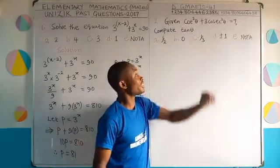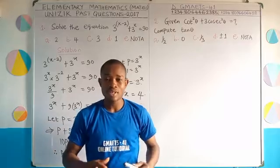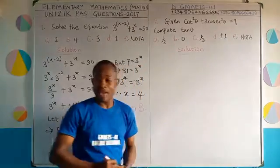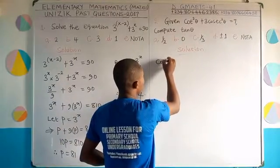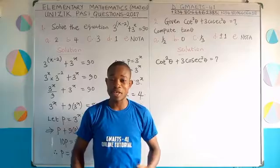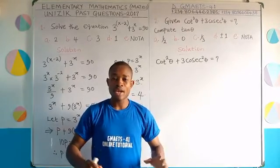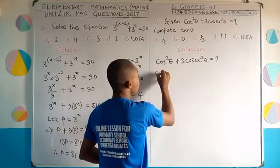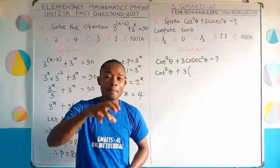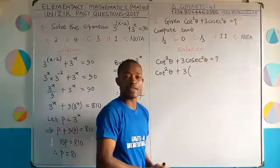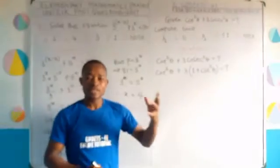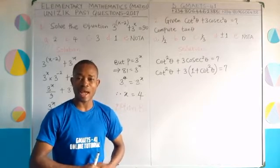Question 2: given cot squared theta plus 3 cosec squared theta equals 7, compute tan theta. This problem is from trigonometry. We rewrite the expression substituting the Pythagorean identity: cosec squared theta equals 1 plus cot squared theta. Please take a look at the note extract from the GMATS 41 Engineering Mathematics trigonometry class.